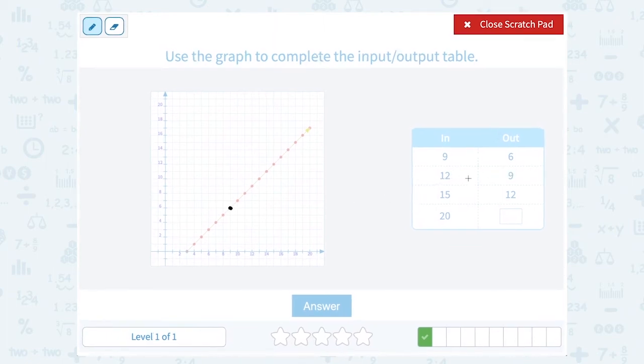My input is 12, my output is 9. That's telling me to go 12 to the right and up 9, or the point 12, 9.